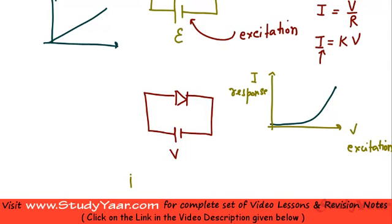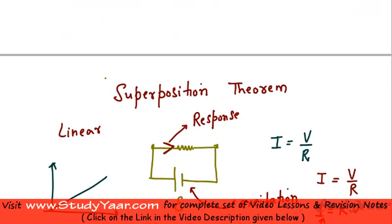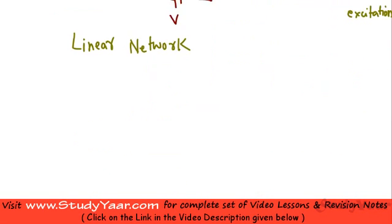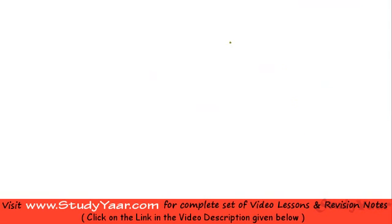So, if your network only has linear elements, then it is a linear network. And the superposition theorem, which we are going to look at shortly, is only applicable to linear networks.